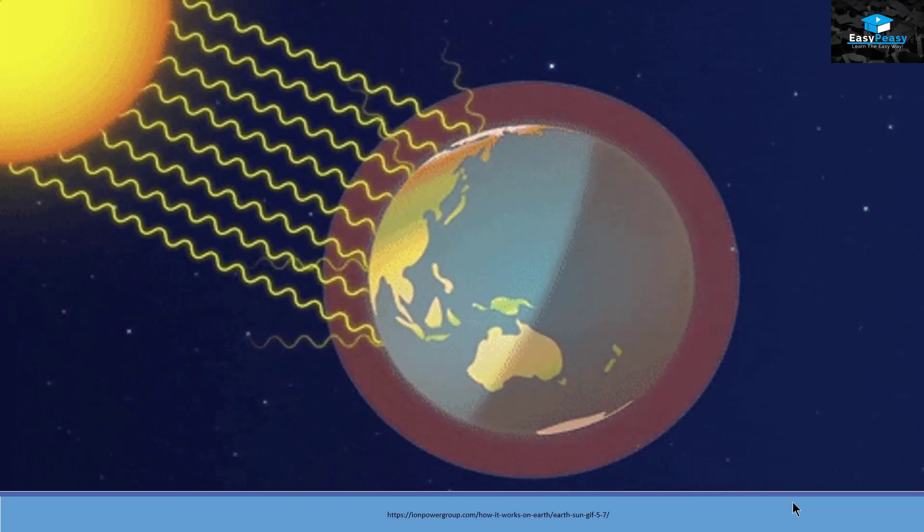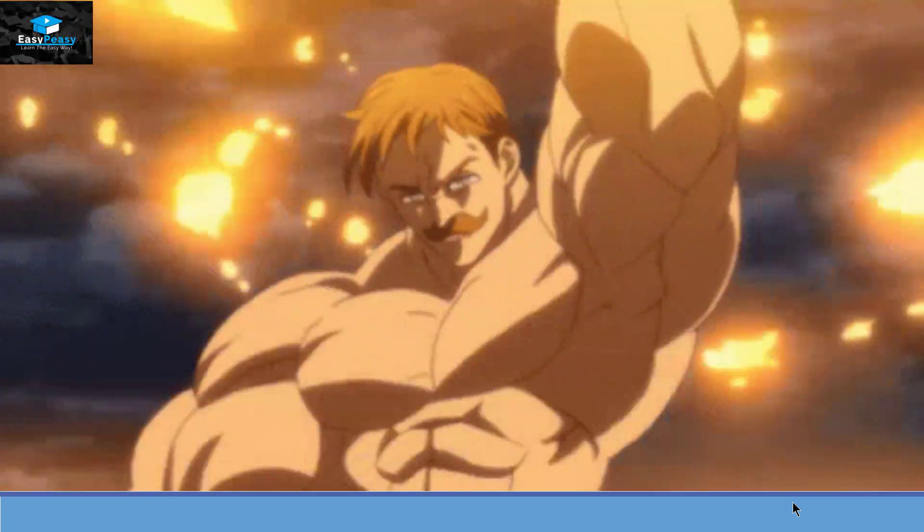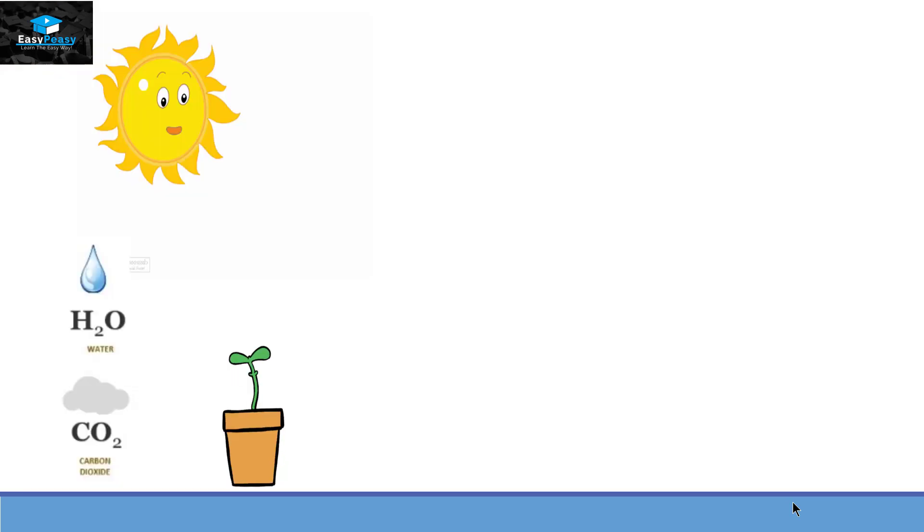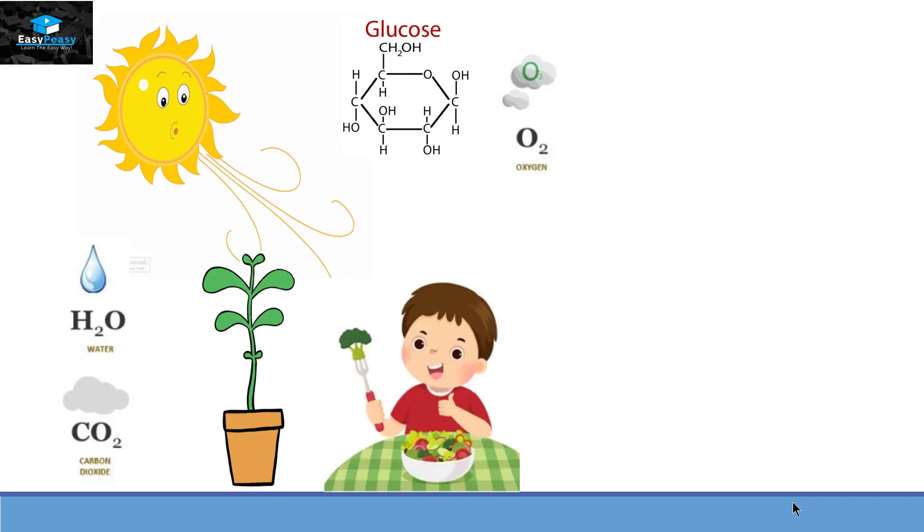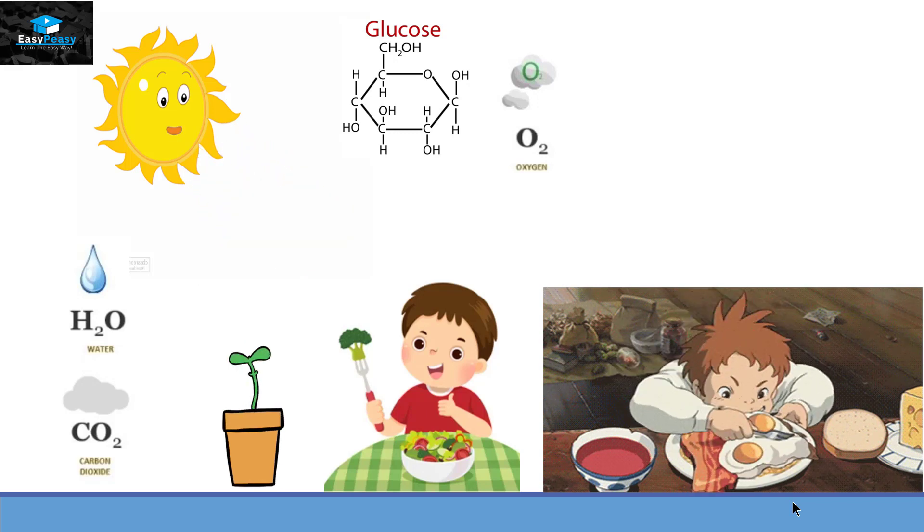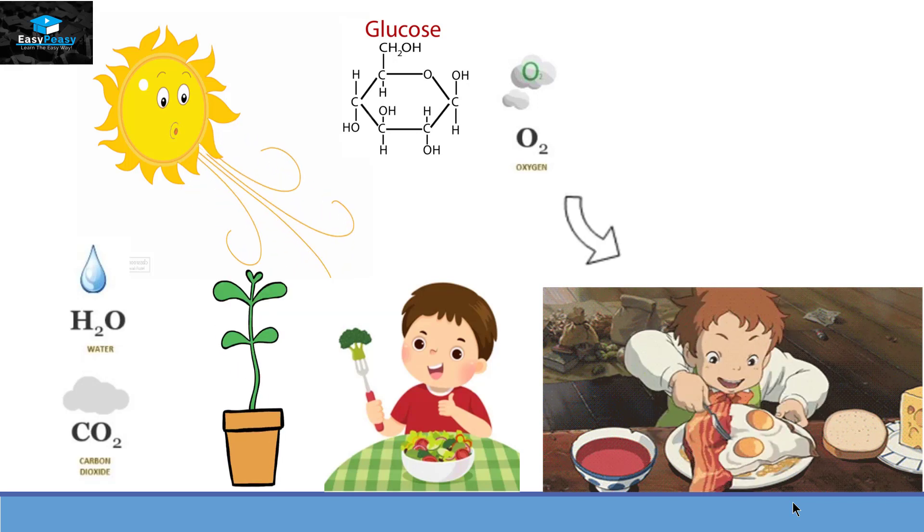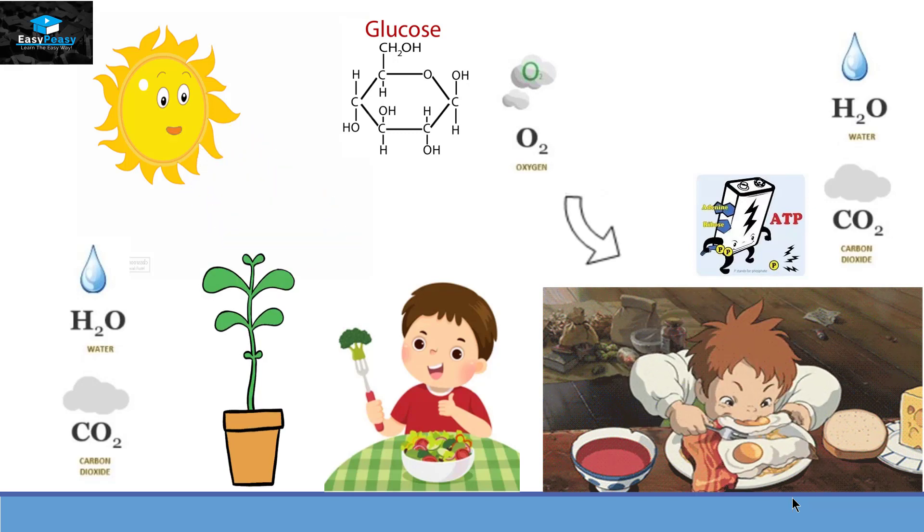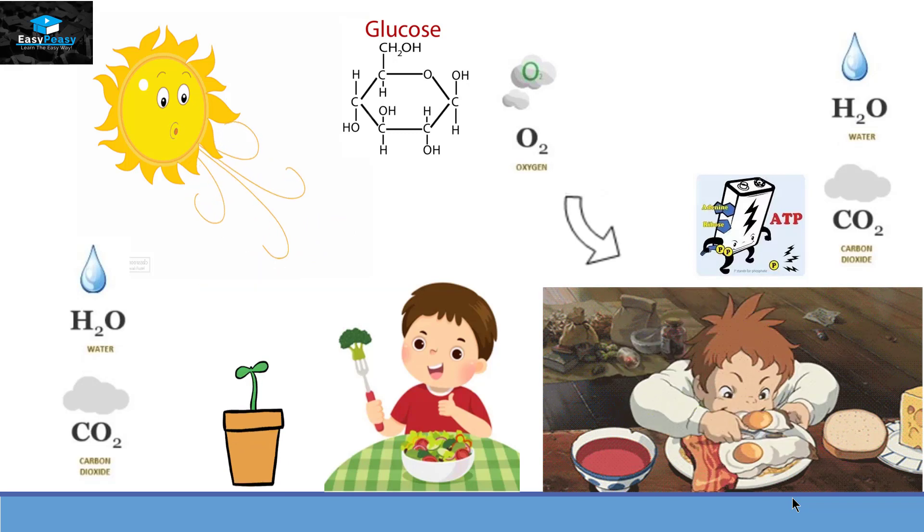Now for planet earth, the main source of energy is sunlight. And we are not Escanor from seven deadly sins who can absorb energy directly from sunlight. Rather, the sunlight energy is absorbed by plants. With the help of carbon dioxide and water, it can convert this light energy into glucose. And this glucose will be utilized by us, either by eating those plants directly or by eating animals that are eating those plants. So directly or indirectly, we are taking this glucose and will convert it into ATP, with the byproducts of water and carbon dioxide. This ATP is the energy source for our body to do every type of work.